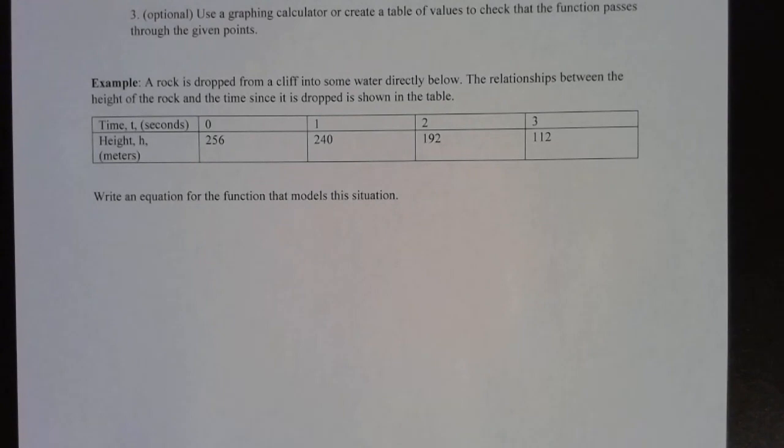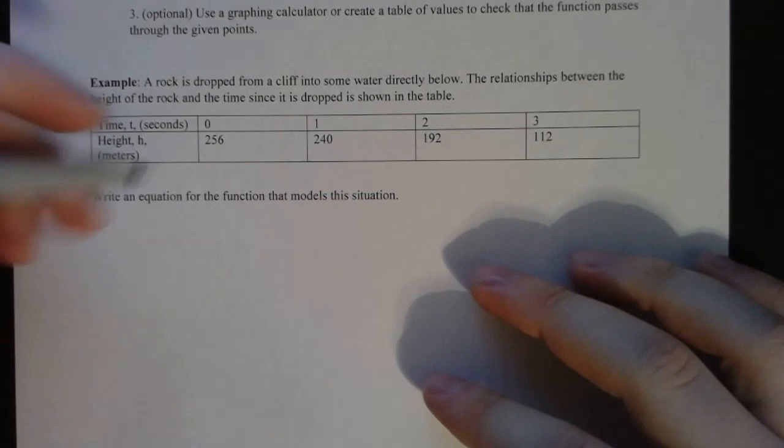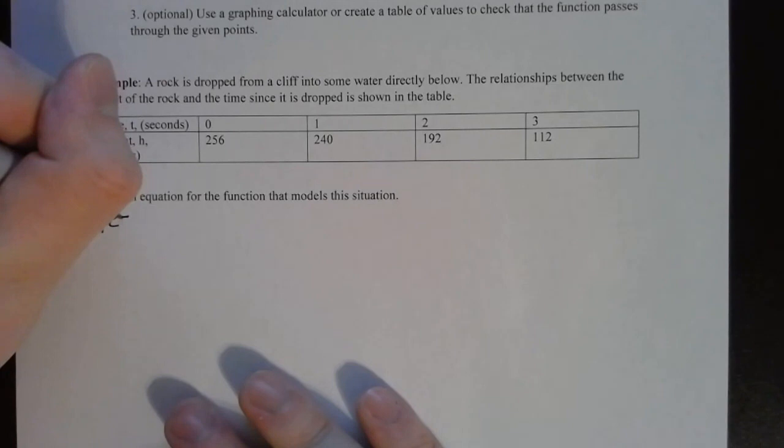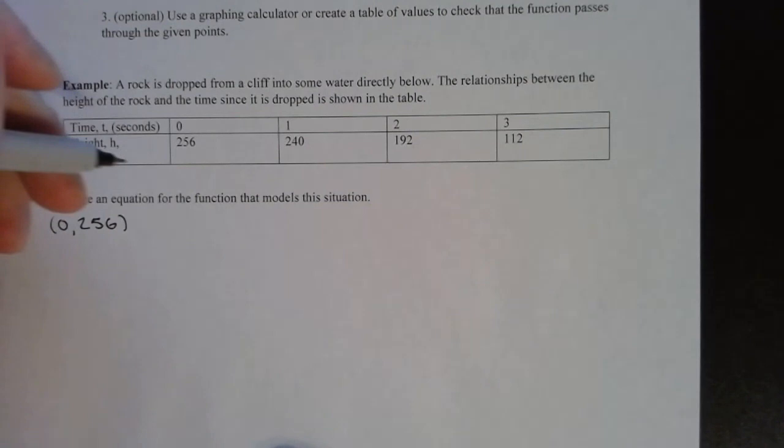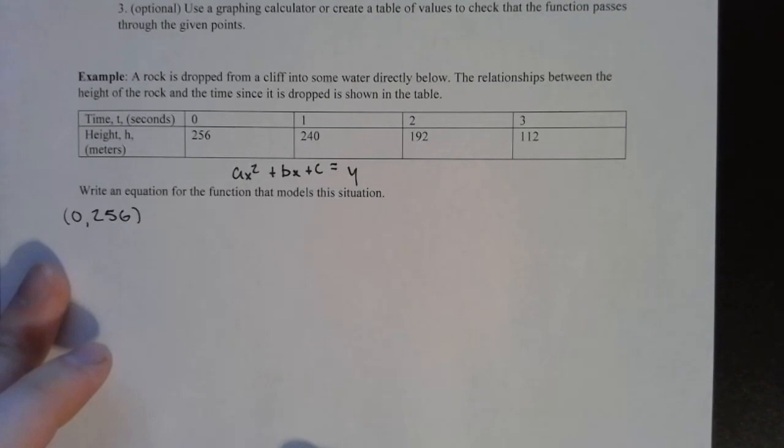A rock is dropped from a cliff into some water directly below. The relationship between the height of the rock and the time since it is dropped is shown in the table below. So here we're given our values that we're going to use to make our system and I think we can go ahead and just use these first three coordinates. So what we want to do here is we want to take this first coordinate zero, 256, and we want to plug it in to our generic ax squared plus bx plus c equals y formula.